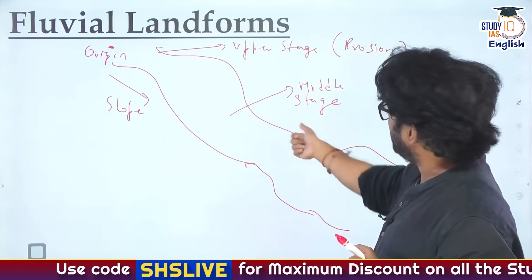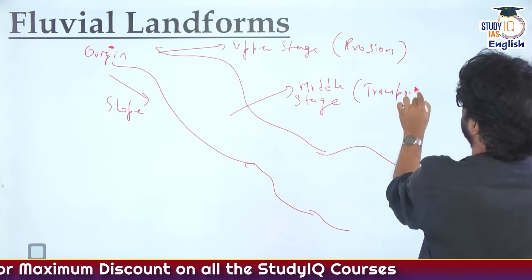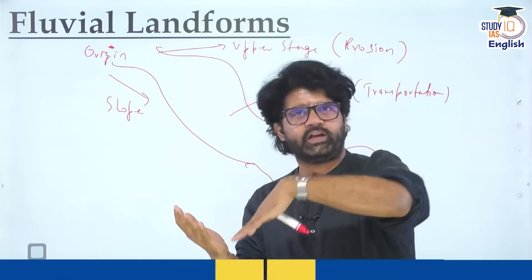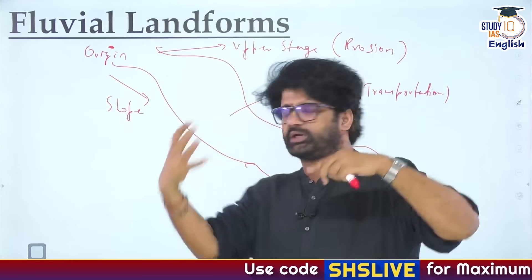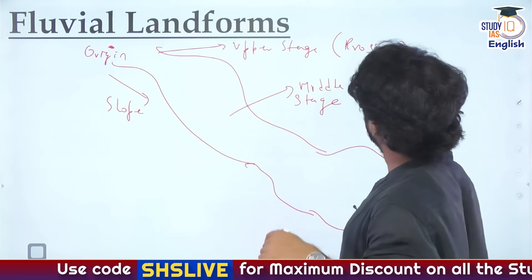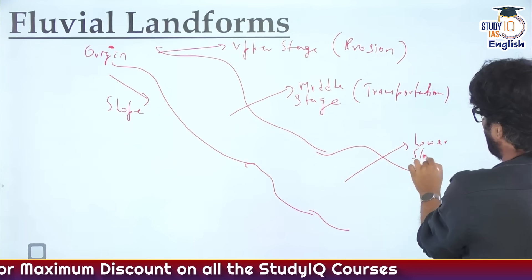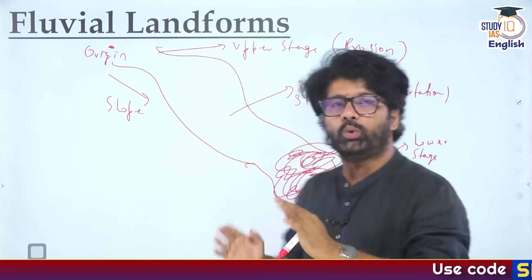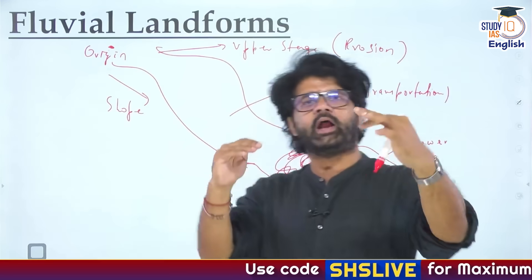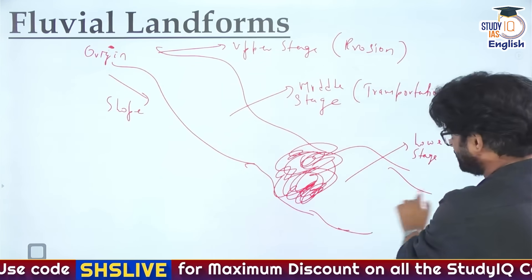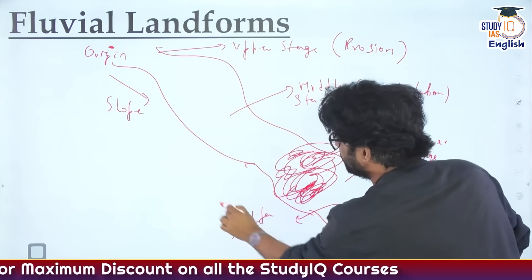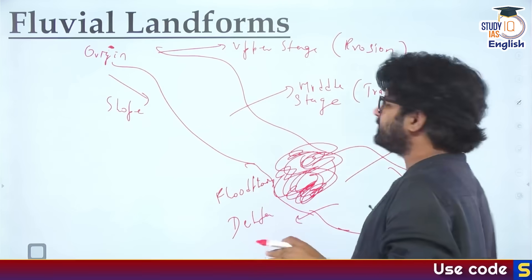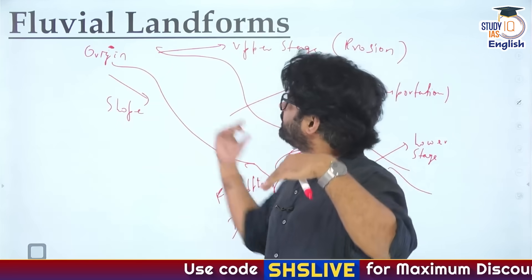Upper stage: speed of river is very high, erosion is the main work. Middle stage: transportation. In the upper stage the steep slope means the river erodes stuff and carries a lot of sediment, which is transported in the middle stage. Then comes the lower stage, where the accumulated sediments slow the river. The speed reduces considerably, the river reaches the sea forming features like deltas and flood plains. Flood plains also form in some phases of the middle stage.